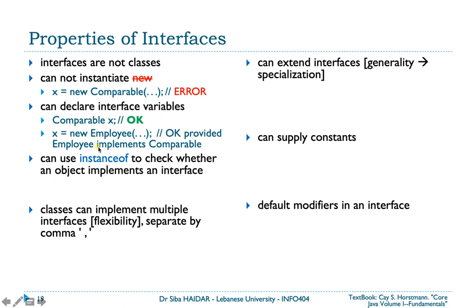You can use the instanceof operator — which we have already seen in the reflection section in the previous chapter — with interfaces as well. It returns true whether the object implements the interface. So if an object is an instance of a class that implements Comparable, that check is totally fine.